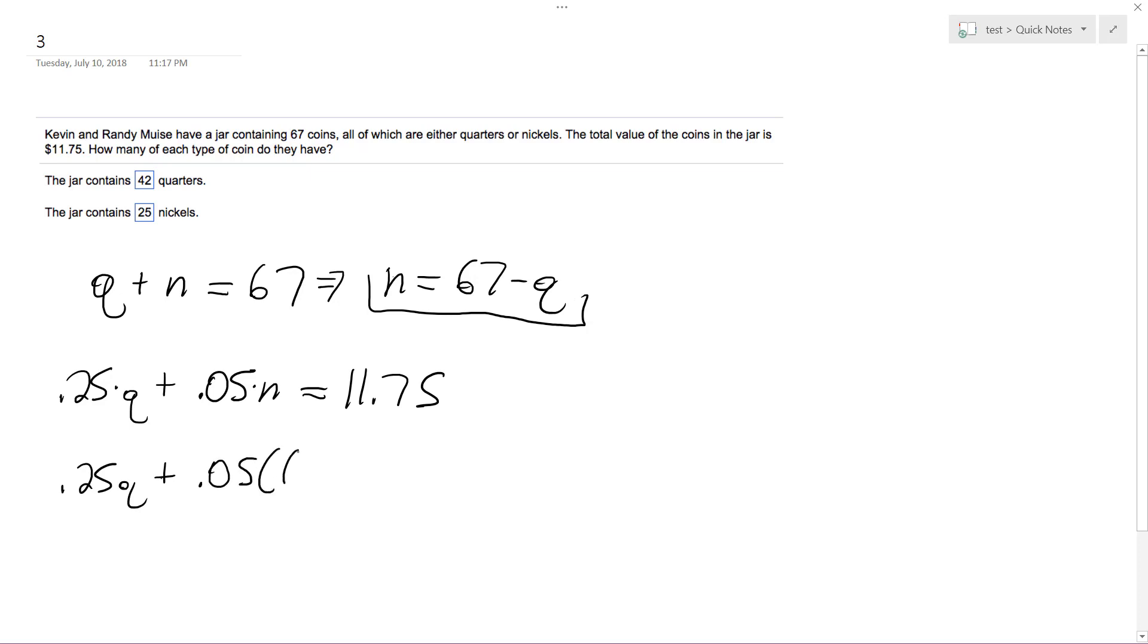0.05 times (67 minus Q) is equal to $11.75. So we have here 0.25Q plus 3.35 minus 0.05Q equals $11.75.